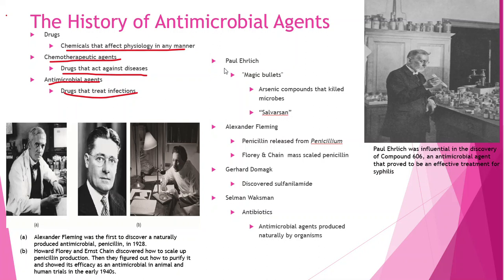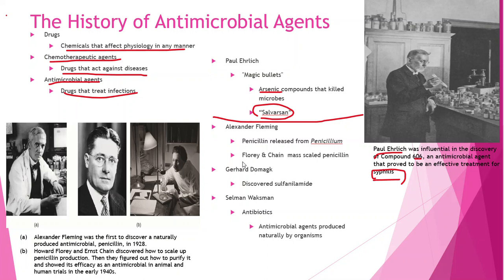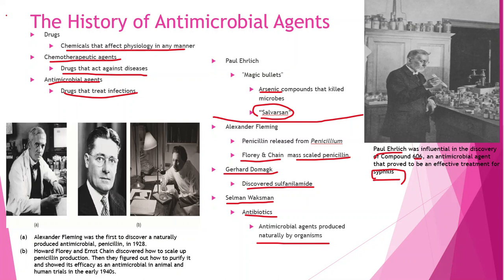As far as history, Paul Ehrlich discovered a compound he called 606, which worked against syphilis — he called it Salvarsan, and it's basically an arsenic compound. Alexander Fleming discovered penicillin from the penicillium mold that grew on bread. Gerhard Domagk discovered the sulfa drugs, and Selman Waksman discovered antimicrobial agents produced naturally by organisms, of which penicillin is one.